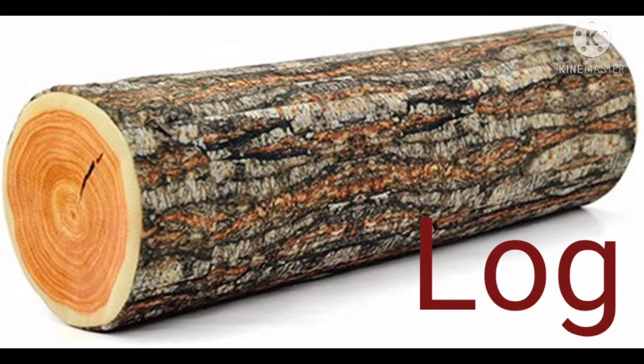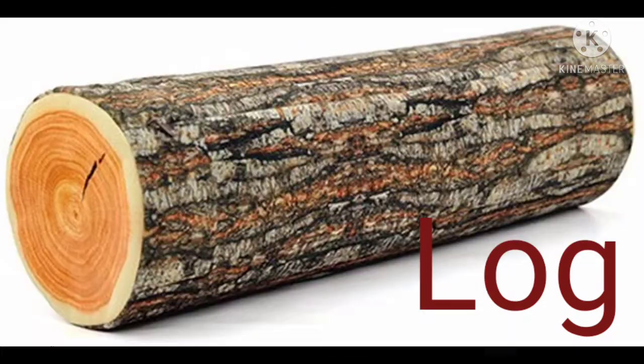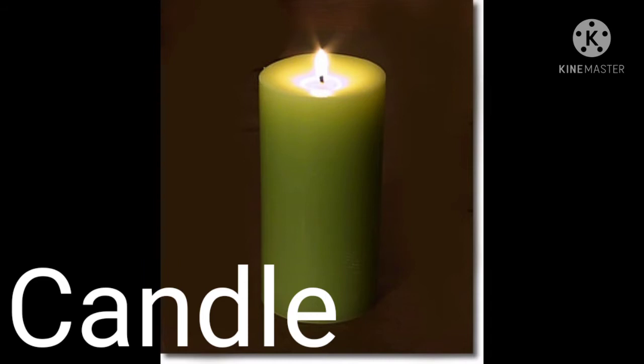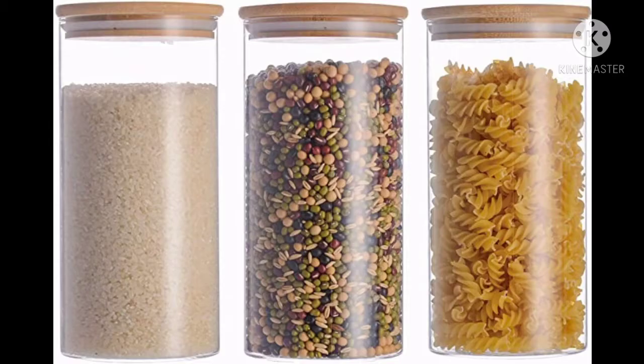This is a picture of a log, and its shape is cylinder. Now see — this is a candle, a lighted candle, and its shape is cylinder. See, these are jars. Ye kya hai? Jars hai. And what is the shape of these jars? Cylinder.